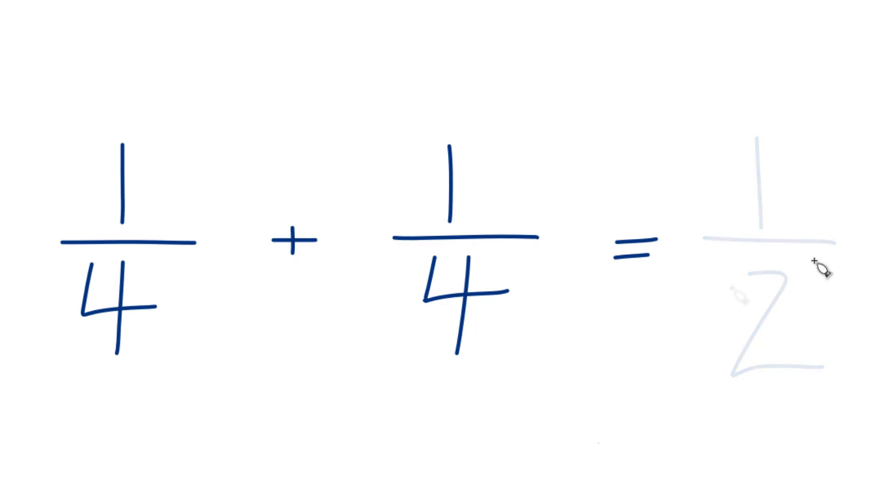And here's how we get there. When you're adding fractions, we keep the denominator, the one on the bottom, the same. So we keep the four the same on the bottom, and then we add the numerators. Those are the ones up there on the top. So one plus one is two.